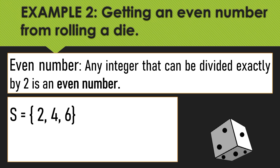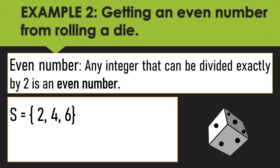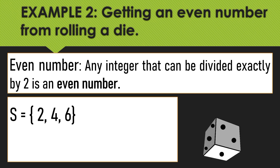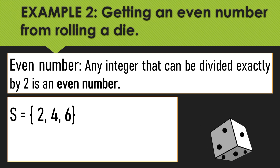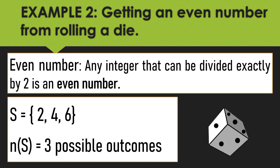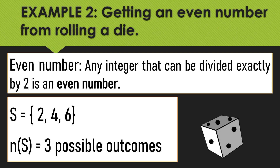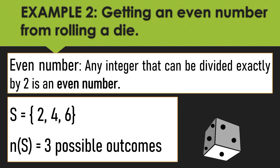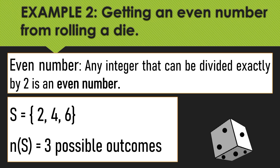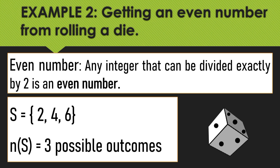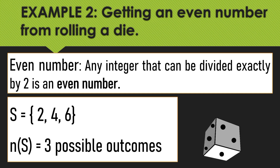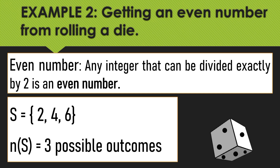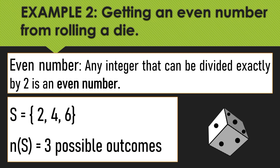Since 2, 4, and 6 can be divided by 2, our sample space is equal to {2, 4, 6}, and we only have 3 possible outcomes. So N(S) = 3 possible outcomes.